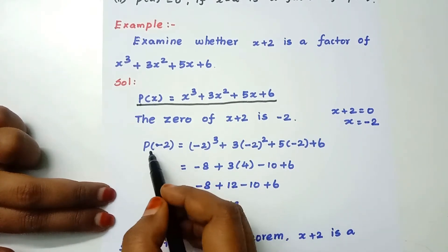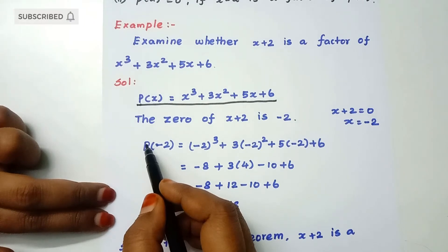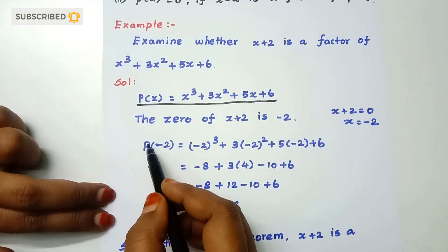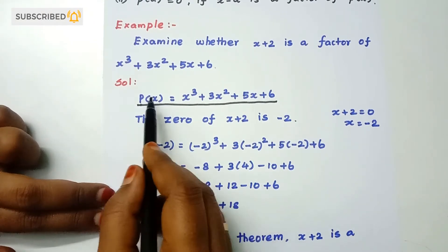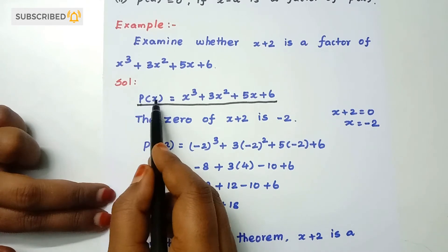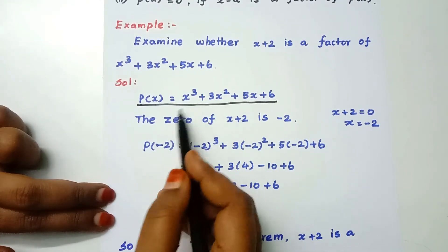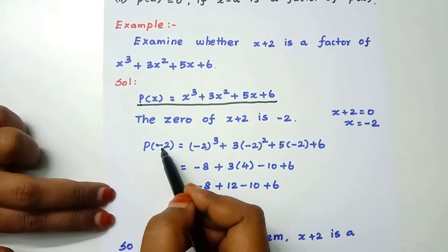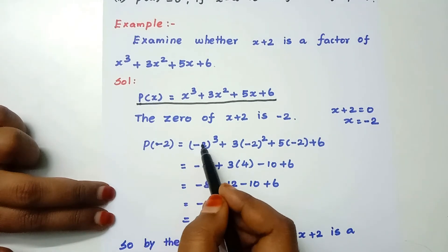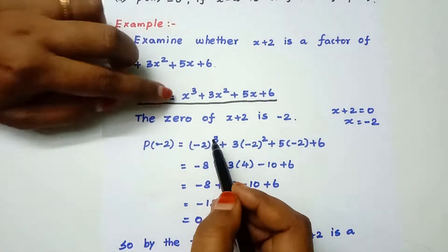We apply the value x equals minus 2 into P(x). So we substitute x equals minus 2 into x cubed plus 3x squared plus 5x plus 6.